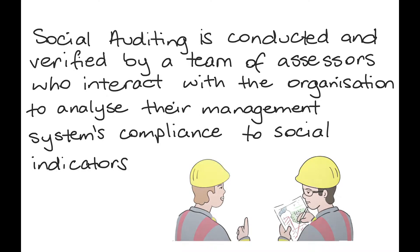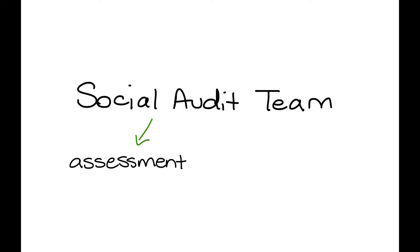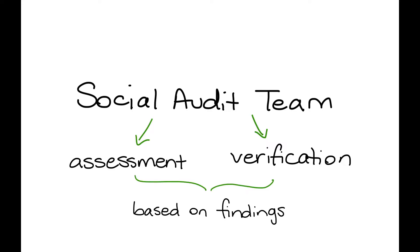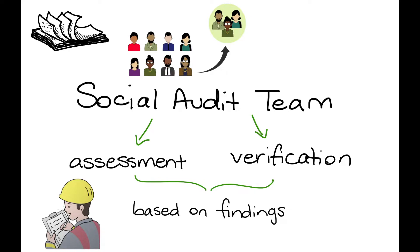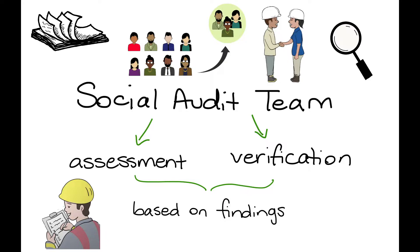The social audit team then conducts their own assessment and verification based on their findings through on-site visiting, document review, sample collection, stakeholder consultation and individual stakeholder interviews, local, historical and cultural research, and the corroboration of this information.